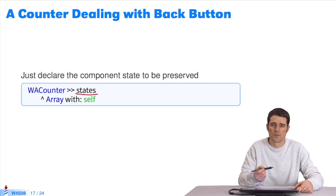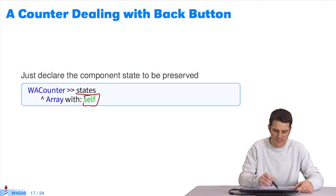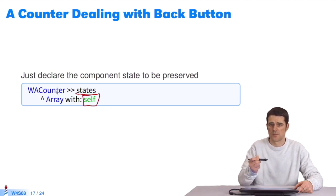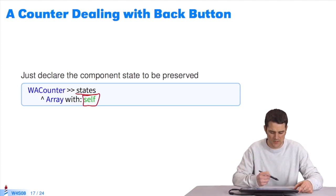It will return the array for which the state is to be preserved when the back button is hit. In this case, it is only the object self, the counter. Now, if I press back and then click on plus plus, I should see 5 again.